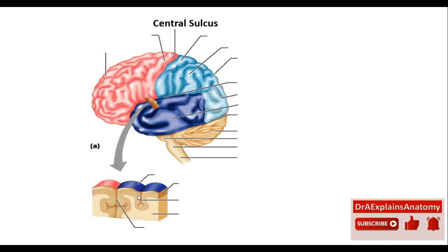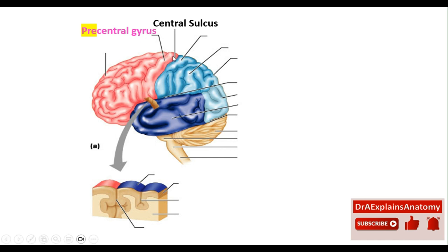This is the central sulcus. It separates the pre-central gyrus — pre- meaning before — the central gyrus, this ridge right here. And this is the post-central gyrus.